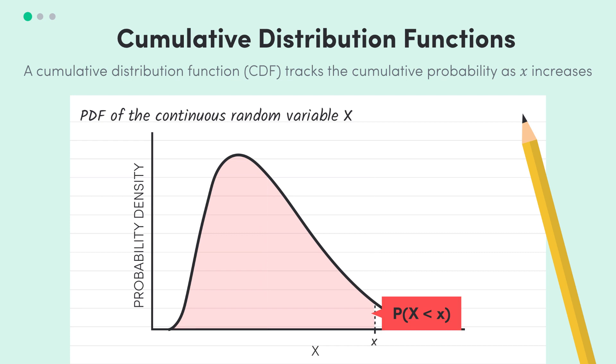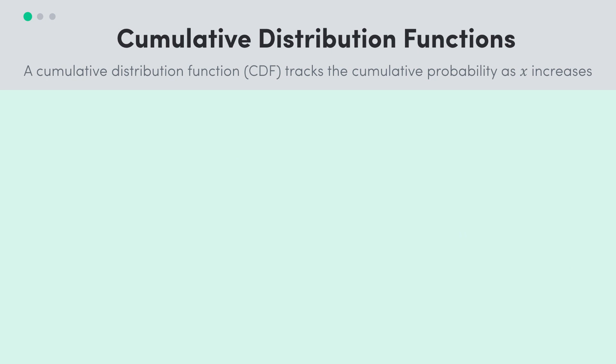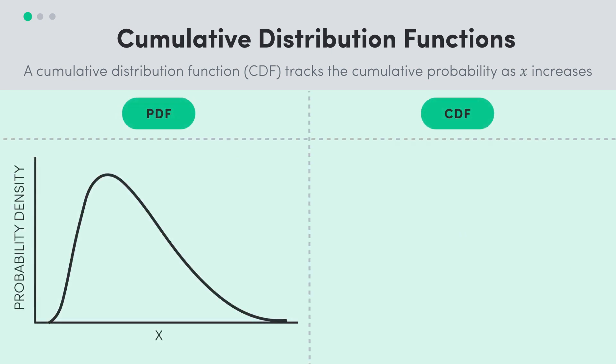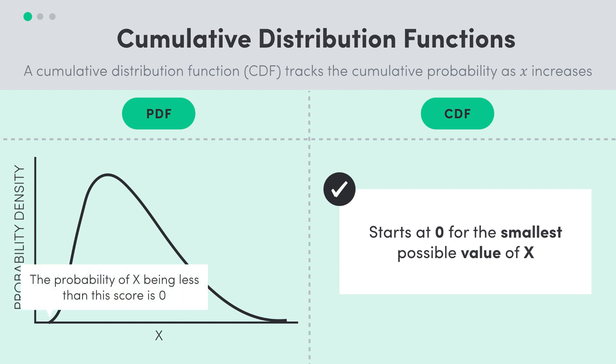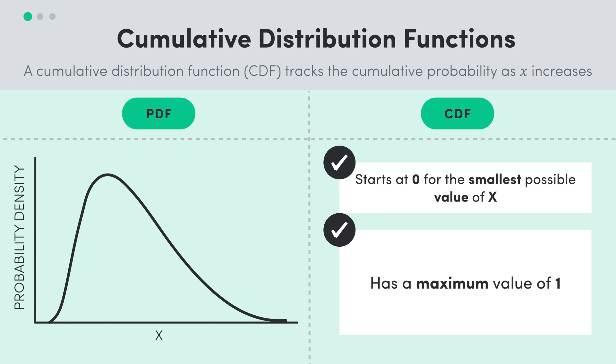There are a few really important properties of this CDF. Firstly, the cumulative density function starts at a value of 0 for the smallest possible value of our random variable x. The probability of our random variable being less than its smallest possible value is of course 0. Alternatively, the cumulative density function has a maximum value of 1.